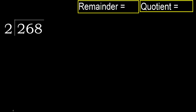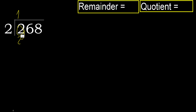268 divided by 2. 2 is not less, therefore start with 2. 2 multiplied by which number is nearest to 2 but not greater? 2 multiplied by 2 is 4, which is greater. 2 multiplied by 1 is 2, which is not greater. Subtract. Next.